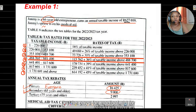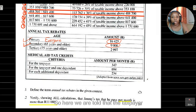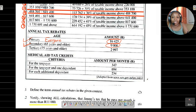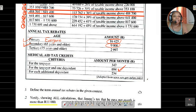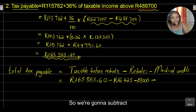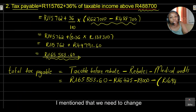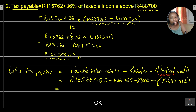For medical credits: Jimmy pays for medical aid for himself and his wife — two people. The taxpayer plus one dependent qualifies for R694 per month. However, since we need an annual figure, we multiply R694 by 12 to get an annual medical credit of R8,328.